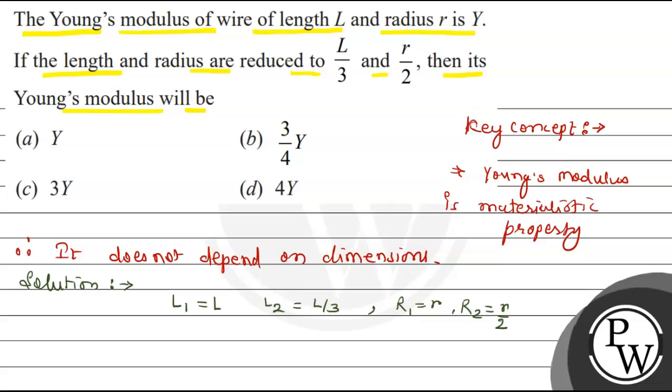So, dimension is changed. It means that L is changed to L by 3 and R is changed to R by 2.